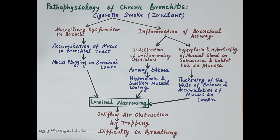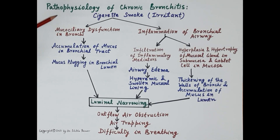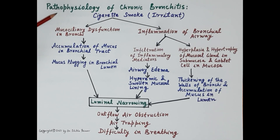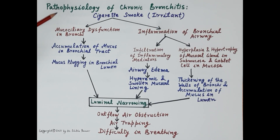This schematic diagram clearly explains the pathophysiology of chronic bronchitis. One important thing to remember is that chronic bronchitis is a disease of larger airways — that is, the bronchi and the trachea — and it is a largely irreversible disease.